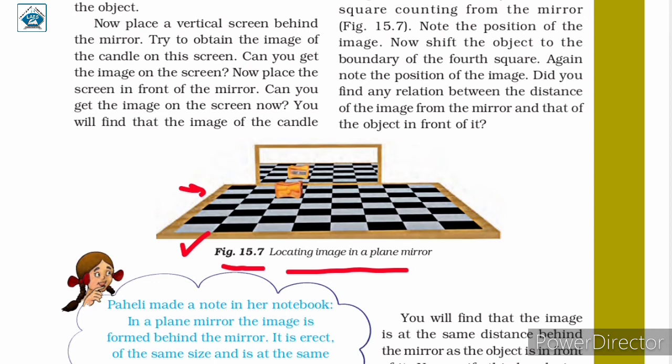Next, shift the sharpener to the boundary of the fourth square and again note the position of the image. We are asked: did you find any relation between the distance of the image from the mirror and that of the object in front of it?